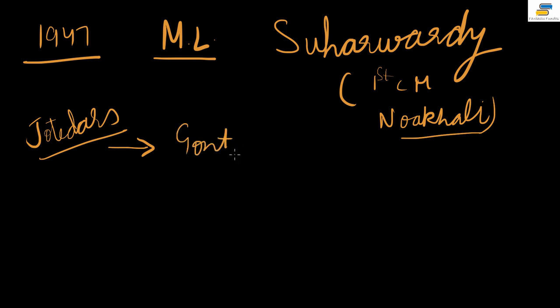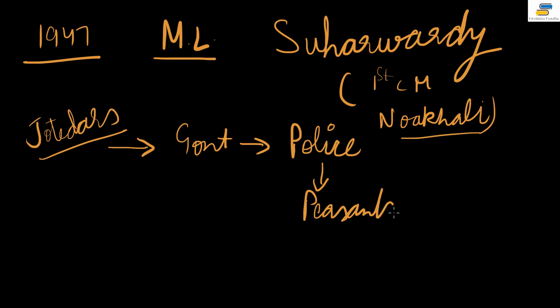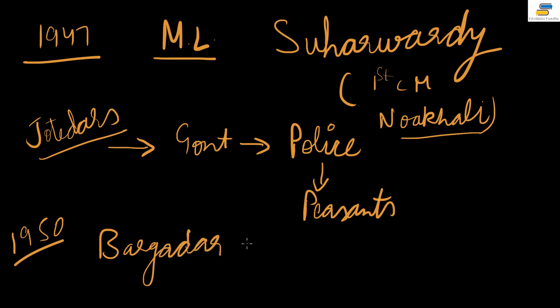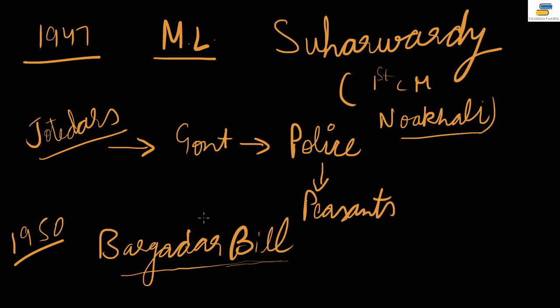The government was always looking for an opportunity to suppress people, so when Jotedars complained, police were sent and the peasants were suppressed — that is where the Tebhaga struggle led. After independence, in 1950, Congress passed the Bargadar Bill, which incorporated the demands of the Tebhaga struggle. You must mention this bill in your answer on Tebhaga — it gives a sense of completeness.